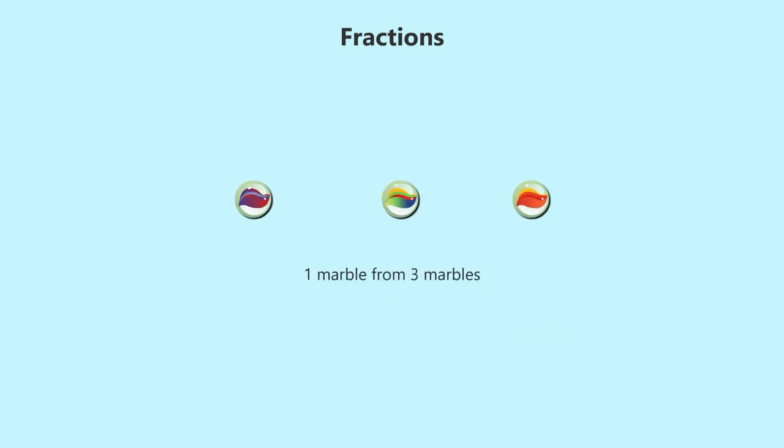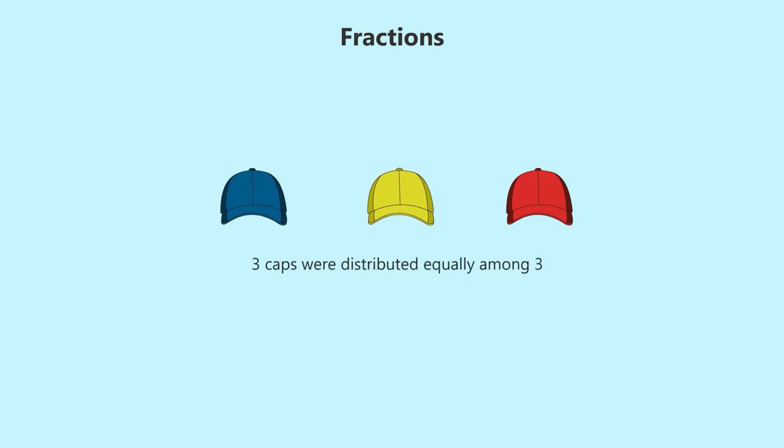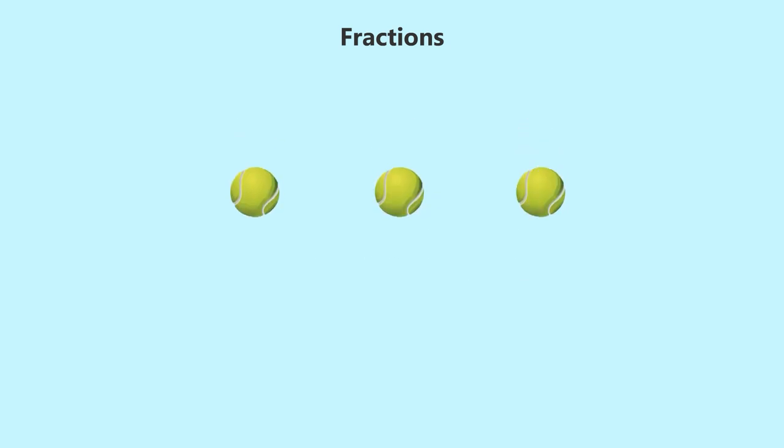Each child was given one marble from three marbles. Three apples were equally given, so each got one apple. Three caps were distributed equally among three.